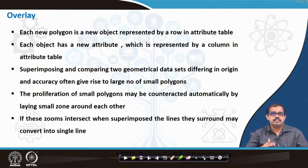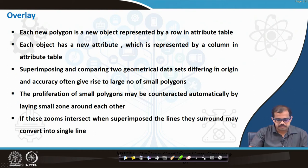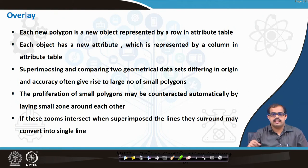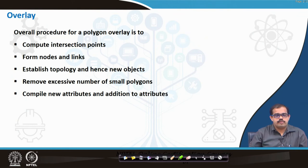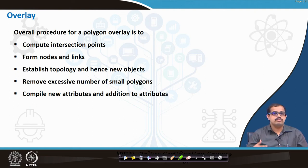The proliferation of small polygons may be contracted automatically by laying smaller zones around each other. If these zones intersect when superimposed, the lines they surround may convert into a single line. The overlay procedure for polygon overlay is: compute intersection points to form nodes and links, establish topology and new objects, remove excessive small polygons, and compile new attributes and additions to attributes.